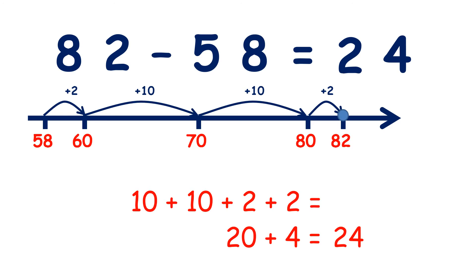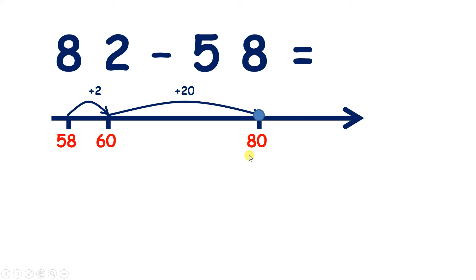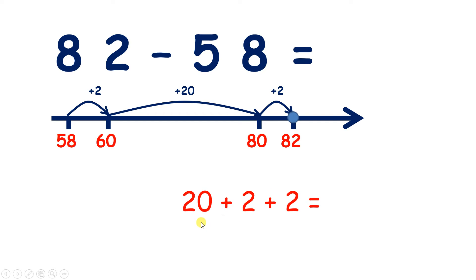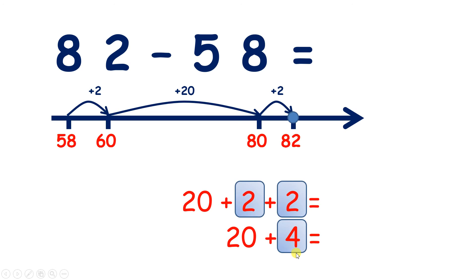Now if we want to do this more quickly, we can start off the same — adding 2 to get to 60. And now we're on 60, we need 20 to get to 80, and now 2 to get to 82. So we have 20 plus 2 plus 2, so we have 20 plus 4, which gives us 24.